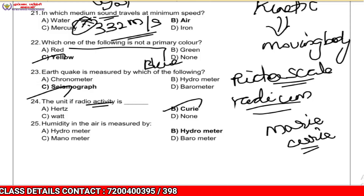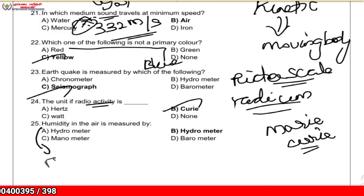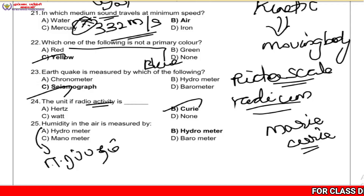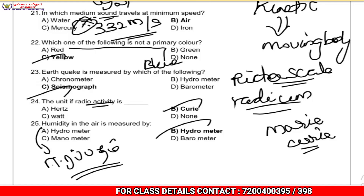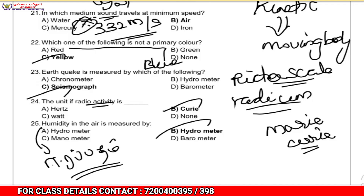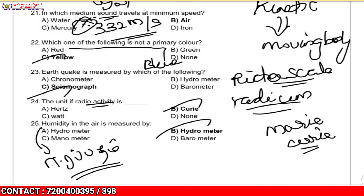Humidity in the air is measured by a hydrometer. That covers question 25. You can learn all 20 science questions well. Thank you.